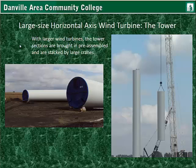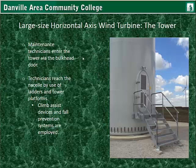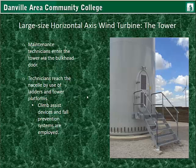For large size horizontal axis wind turbines, the tower sections are brought in pre-assembled with ladders and lighting, and stacked together with large cranes. In the PDF you can see construction workers at the top of the mid-tower section to appreciate the scale. Maintenance technicians enter through the bulkhead door. There is a platform at the bottom — the lower platform — and technicians reach the nacelle at the top by use of ladders and tower platforms. Climb assist devices and fall prevention systems are also used.